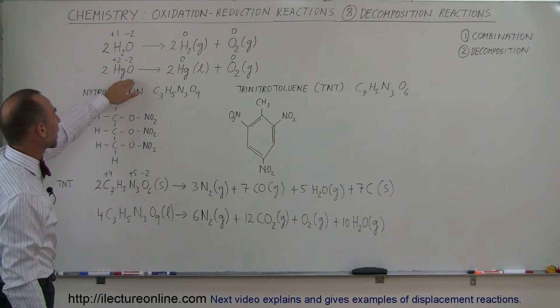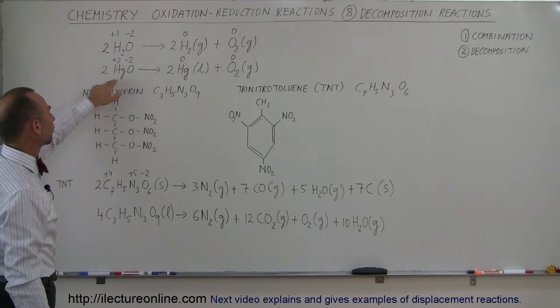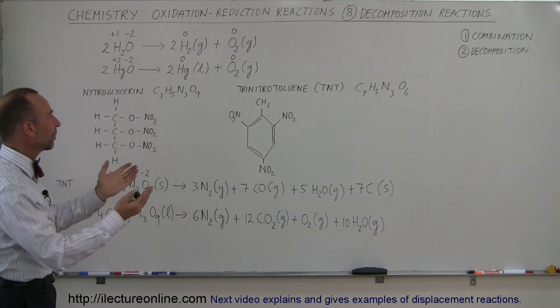Same for mercury oxide. Here we have a positive two oxidation state for mercury, minus two for oxygen. They separate and we end up with liquid mercury and oxygen gas.